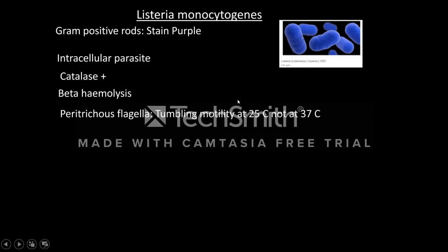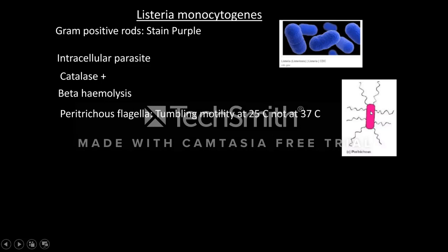It shows tumbling motility — motility without any kind of orientation — at room temperature, but not at human body temperature. As you can see in this picture, these flagella are scattered all around the body of the bacteria. This kind of arrangement, where flagella are scattered all around the body, is called peritrichous.